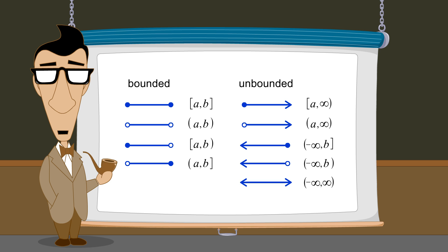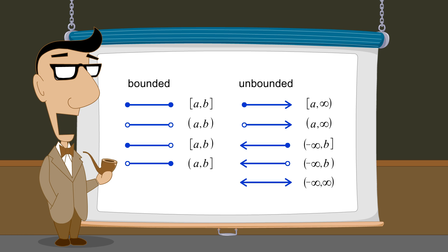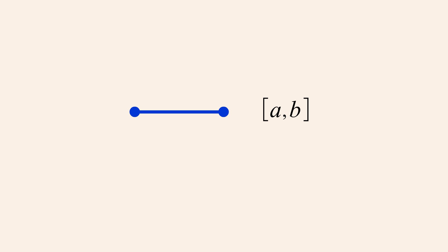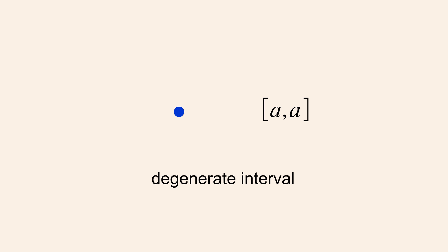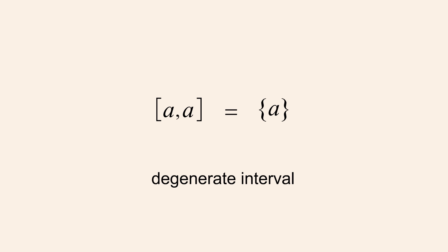These intervals are called proper intervals because they include more than one point. However, not all intervals are proper. It is possible for an interval to include only one point or no points. If the left and right endpoints of a closed interval are the same number, then the interval is called a degenerate interval and represents a single point on the number line. So a degenerate interval is a set which contains one real number.